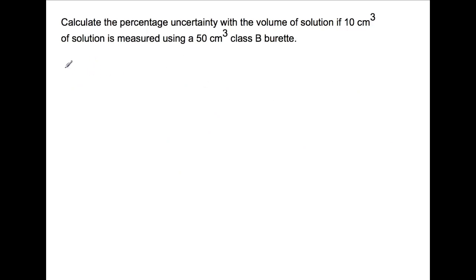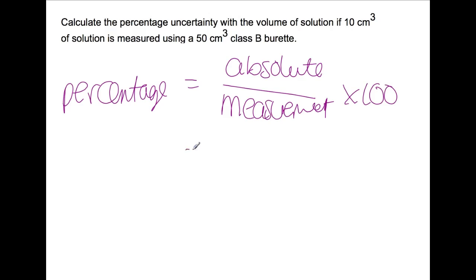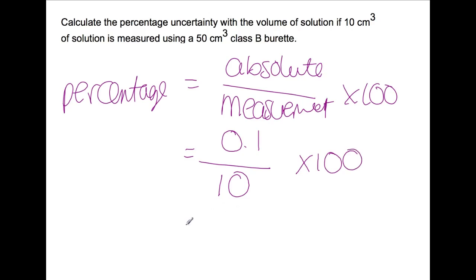Let's have a look at using burettes, which are slightly different. We use the same formula: percentage equals absolute uncertainty divided by the measurement times 100. The absolute uncertainty from the table for a 50 ml class B burette is 0.1. However, the measurement is not 50 ml — we're only measuring 10 ml, so that is what goes on the bottom. That gives us a percentage uncertainty of 1%. Your percentage uncertainty will change as your burette measurement changes. This is why burette readings of five or less are deemed to be inaccurate, because the percentage error you get is so large compared to using a more appropriate sized titer.